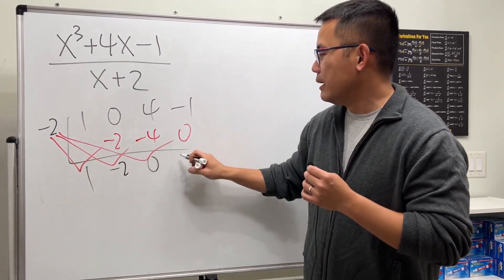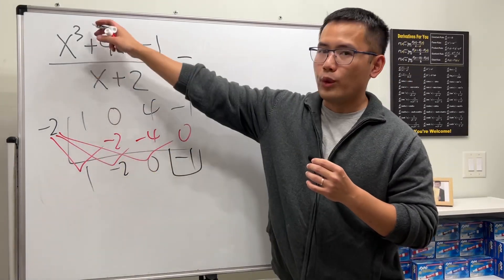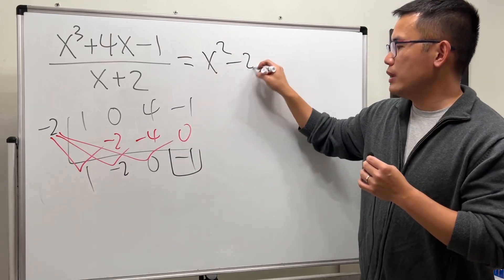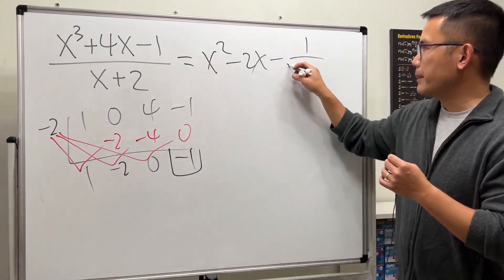And then this time, this is still going to be 0, but finally you have negative 1. This is the remainder. So in fact, this right here, we have 1x squared, and then minus 2x, and then plus 0, and then right here is minus 1 over the original denominator, which is x plus 2.